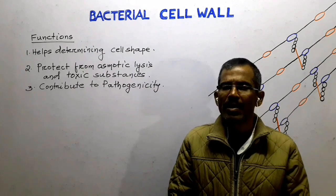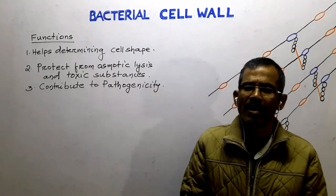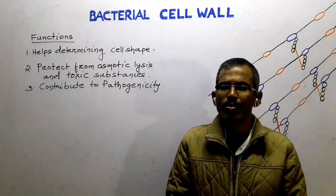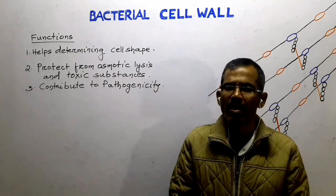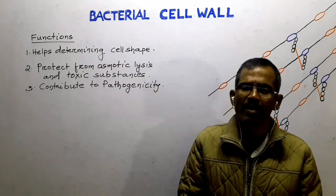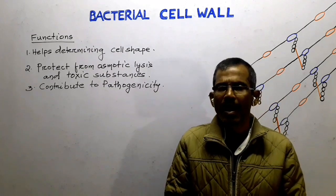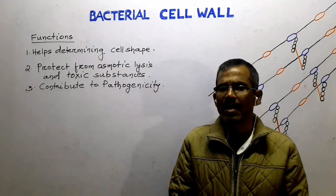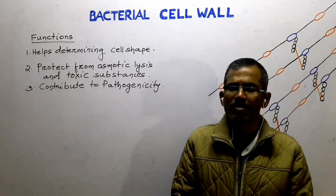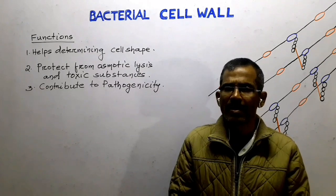On the basis of their response to gram-staining, bacteria can be divided into two different groups: gram-positive bacteria and gram-negative bacteria. Gram-positive bacteria stain purple, whereas gram-negative bacteria stain pink or red.